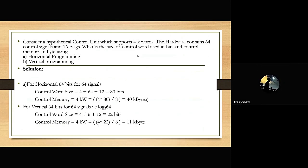Consider a hypothetical control unit which supports four keywords. The hardware contains 64 control signals and 16 flags. We need to find the size of the control word in bits and control memory in bytes using: (1) horizontal programming, and (2) vertical programming.